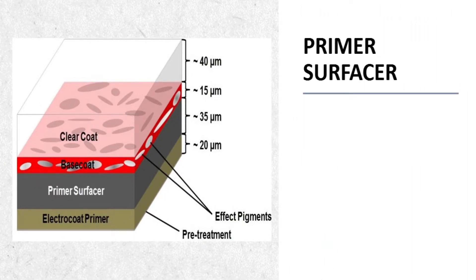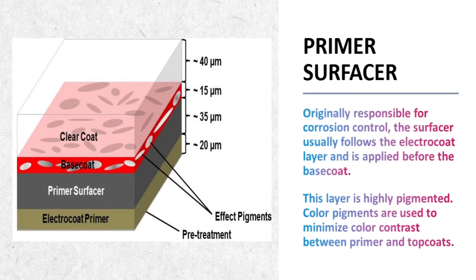The next layer is the primer surfacer. It is originally responsible for corrosion control. The surfacer usually follows the electrocoat layer and is applied before the base coat. Primer surfacers are epoxy modified polyesters or urethanes. The function of this layer is to completely smooth out or hide any seams or imperfections because the color coat will be applied on the surface. This layer is highly pigmented. Color pigments are used to minimize color contrast between primer and top coats. For example, a light gray primer may be used under pastel shades of the color top coat.